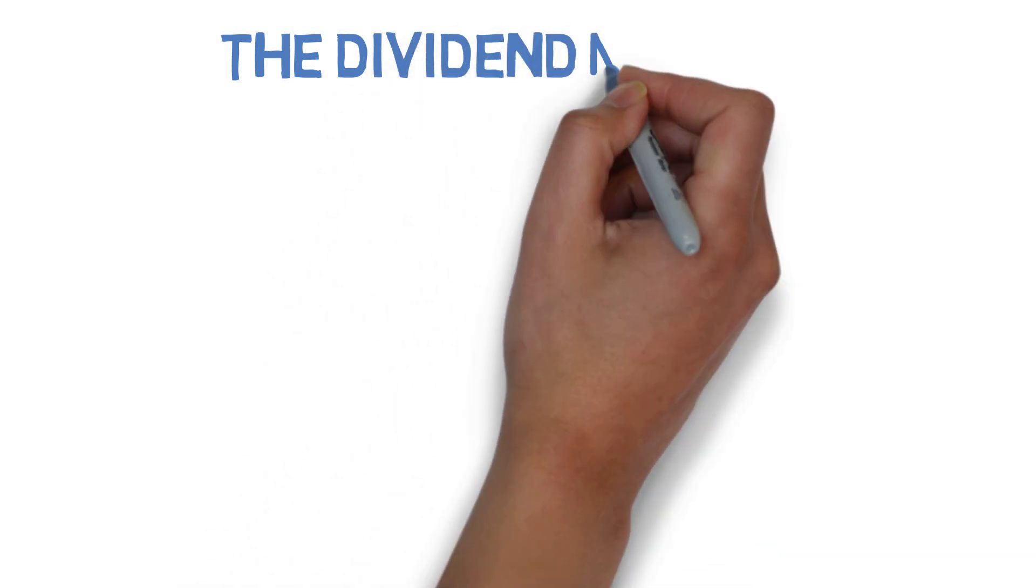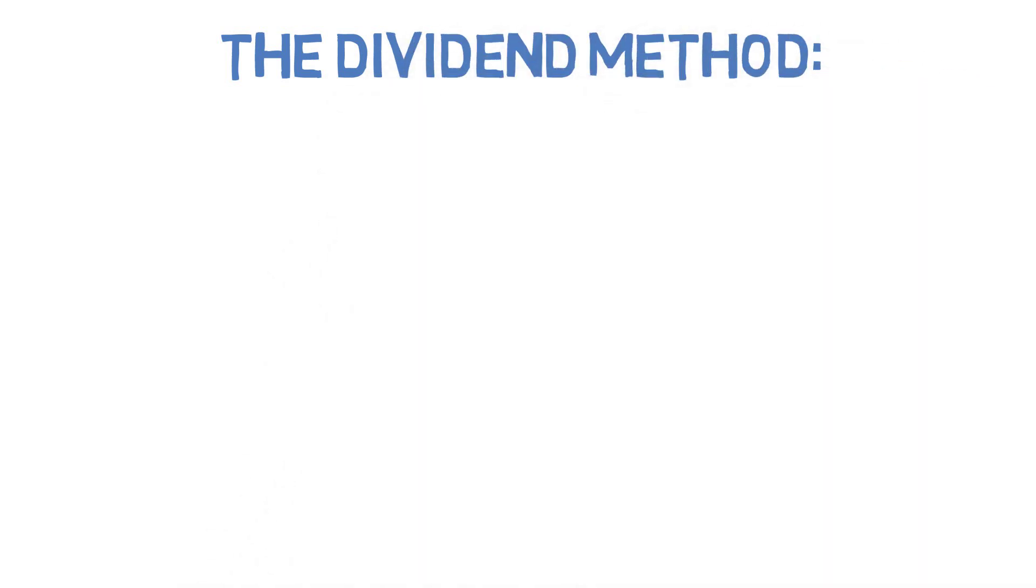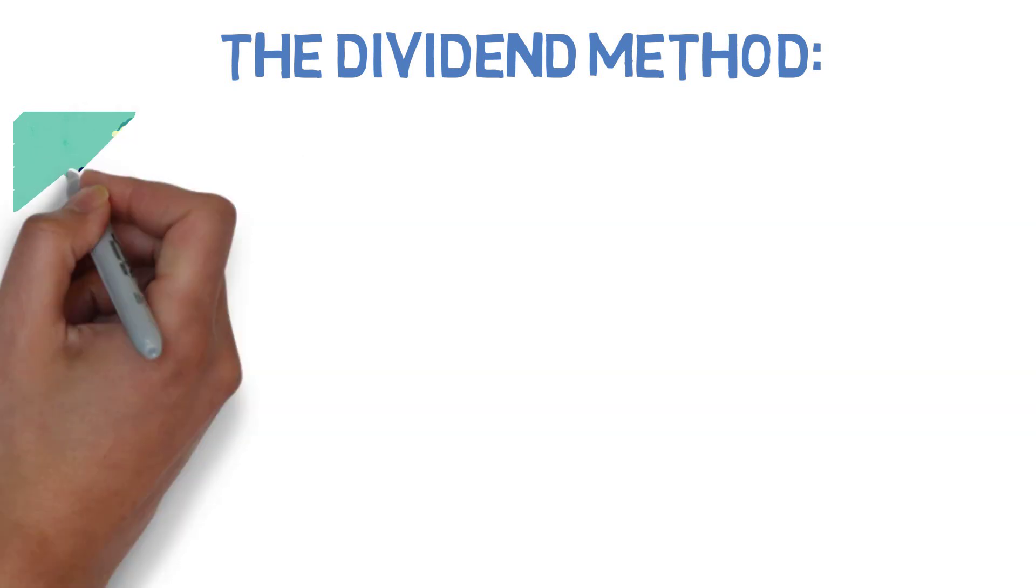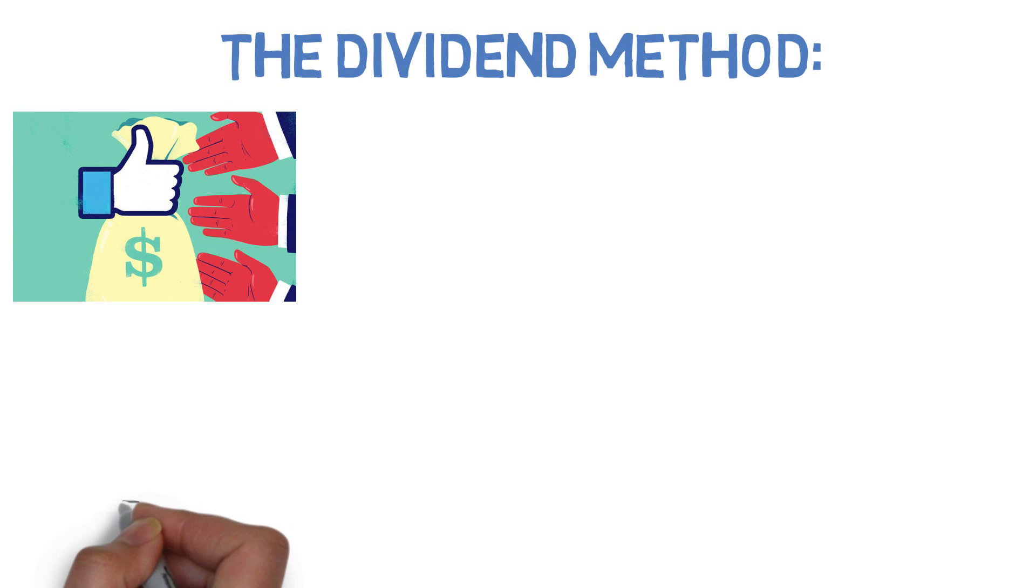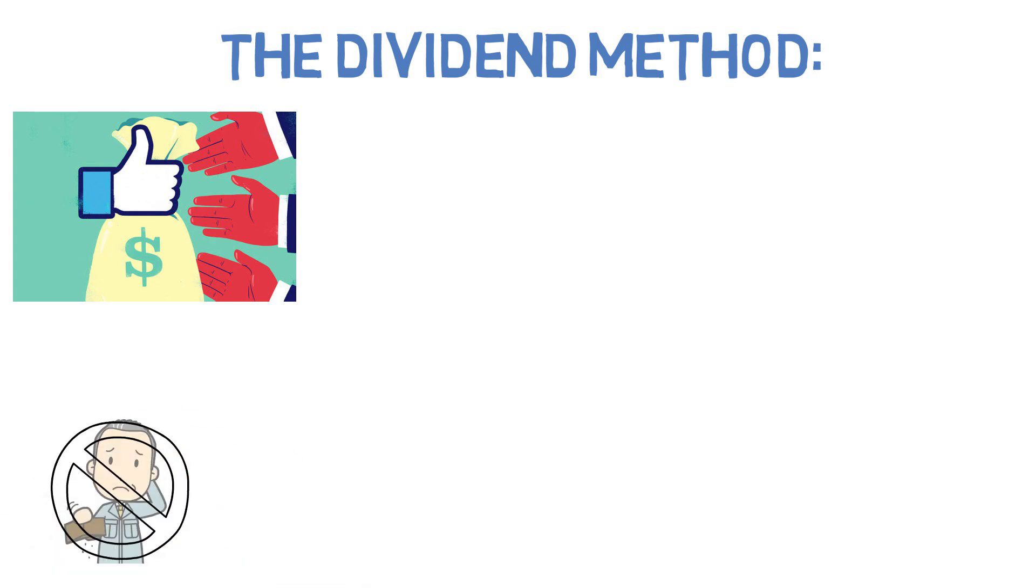The fourth retirement withdrawal strategy we'll be covering today is the dividend method. The dividend method seeks to get you to a point where the dividends from your investments cover all your expenses. The plus side to being able to use the dividend growth investing method is obvious. When done right you don't have to sell any of your shares to cover your bills.